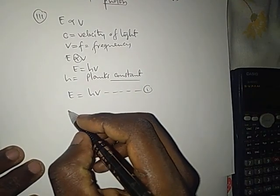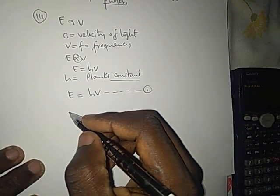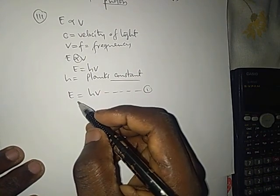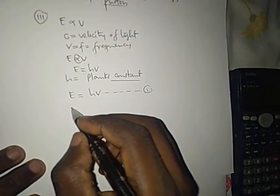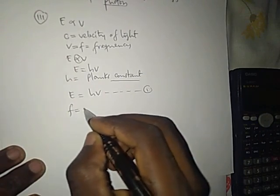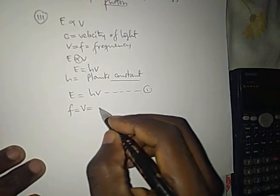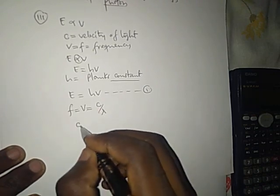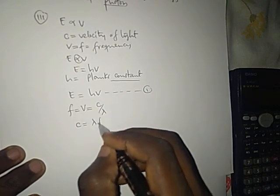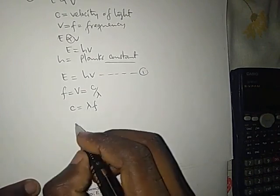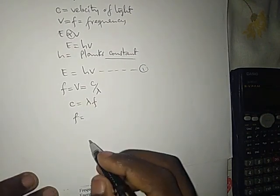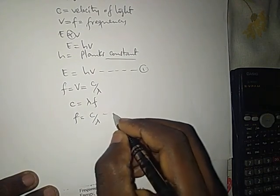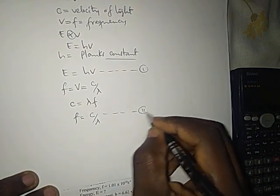From our concept of electromagnetic radiation or from our concept of waves, we say frequency F, which equals V, is equal to velocity C divided by wavelength. In other words, velocity C is equal to wavelength times frequency. Making frequency the subject, frequency will be equal to C divided by wavelength. Let's call this equation two.